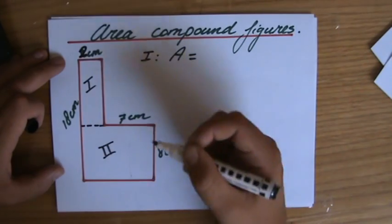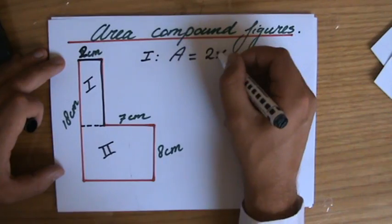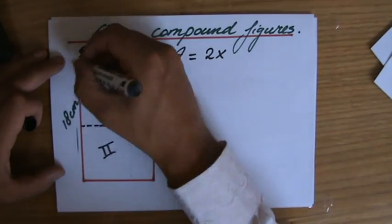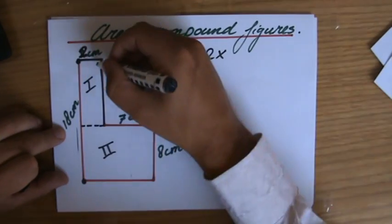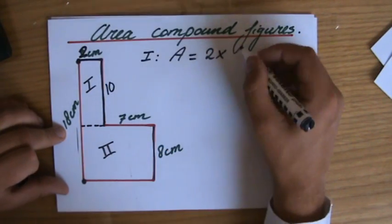So the area of rectangle one: base times height. This is a two, by the way, perhaps that's not very visible anymore. That's a two. So that is two times—what is that length? Two times—is it 18? Now the whole thing is 18 from here to there.